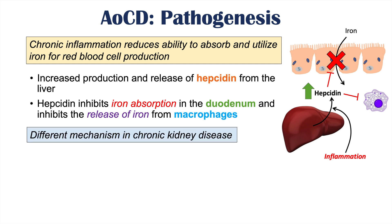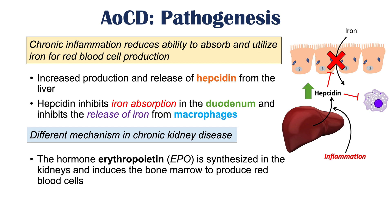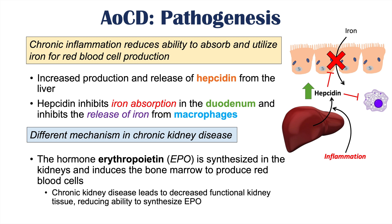There is a slightly different mechanism as to why anemia occurs in chronic kidney disease. The hormone erythropoietin, or EPO, is synthesized in the kidneys and acts on the bone marrow — the site of red blood cell production — to stimulate red blood cell production. In chronic kidney disease, as the disease progresses we lose more and more functional kidney tissue, leading to decreased ability of the kidneys to synthesize erythropoietin. Lower EPO levels mean less stimulation of the bone marrow, resulting in decreased red blood cell production.